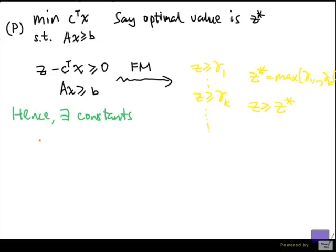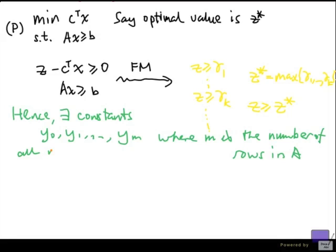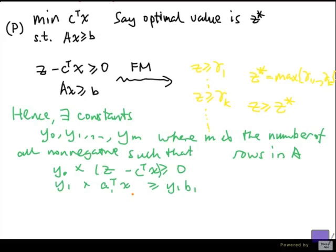Hence, there exists constants y0, y1, up to ym, all non-negative such that if I take y0 times the first inequality plus and so on, where a is now written in terms of rows, a1 transpose up to am transpose.